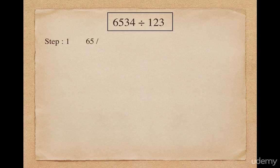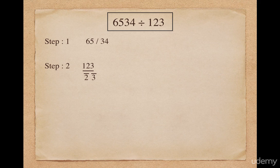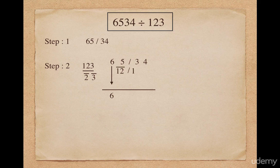So I split 6534 into 65 and 34. As a second step, I apply the concept of transpose and apply. I discard the first digit 1 from the divisor and take the transpose of the remaining digits, giving me 2-bar and 3-bar. So now onwards my divisor will be 2-bar and 3-bar. I follow the same steps as in the Nikhilam formula. I put 6 as it is. 6 multiplied with individual digits 2-bar and 3-bar gives me 12-bar and 18-bar.